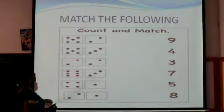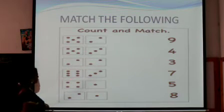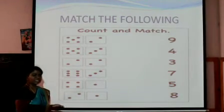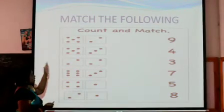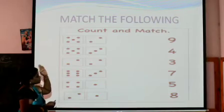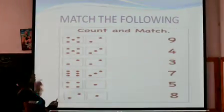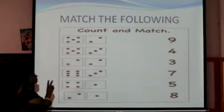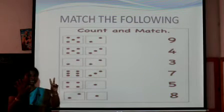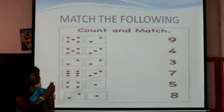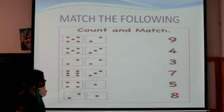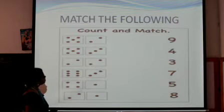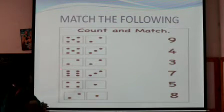Now here we have dice. These are called dice — when you play Ludo or snake and ladder you roll and throw it, then see the number and move accordingly. We are going to count the dots and match them with the number on the right side. In the first dice you have one, two, three, four, five — five, and in the second one you have two dots, so total is one, two, three, four, five, six, seven — seven. So you match it to seven on the right.